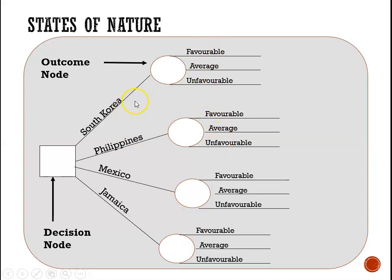If we choose South Korea, the conditions could be favorable, average, or unfavorable. If we choose the Philippines, conditions could be favorable, average, or unfavorable. If we choose Mexico, we could face favorable, average, or unfavorable conditions. And if we choose Jamaica, we could face favorable, average, or unfavorable conditions. So we have our outcome nodes and the states of nature are shown.